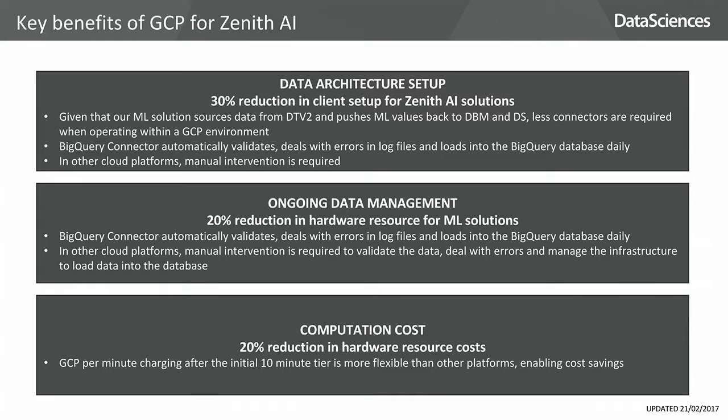Specifically wrapping up on the benefits of GCP for us: we've seen a 30% reduction in the client setup process, which is fairly significant because talent is a challenge. A 20% reduction in hardware resource for machine learning solutions, and a 20% reduction in computation costs — given the scale of what we're doing across roughly 150 global clients, this is really quite significant. But probably the most important thing is I see Google as a partner, not a software supplier.